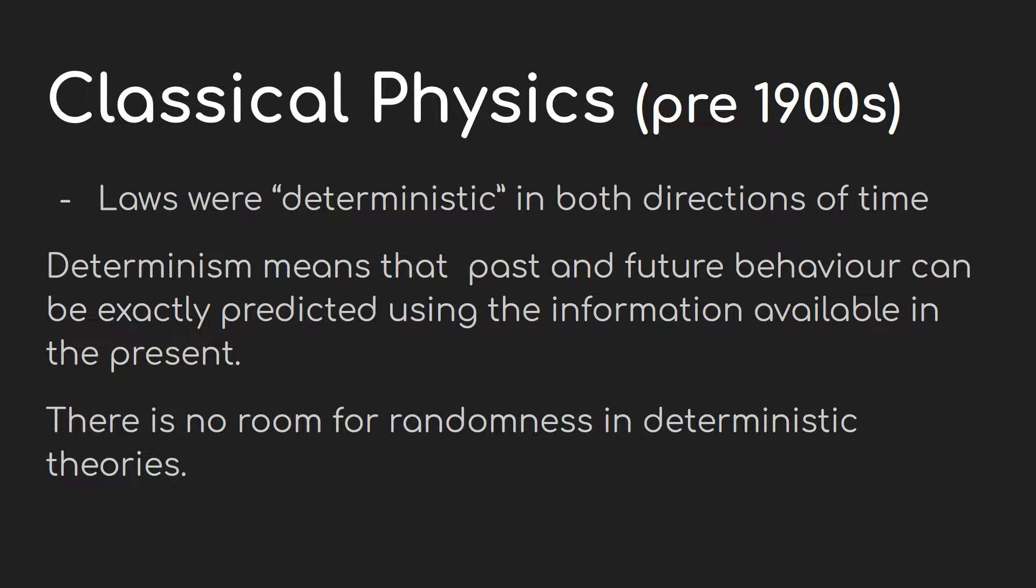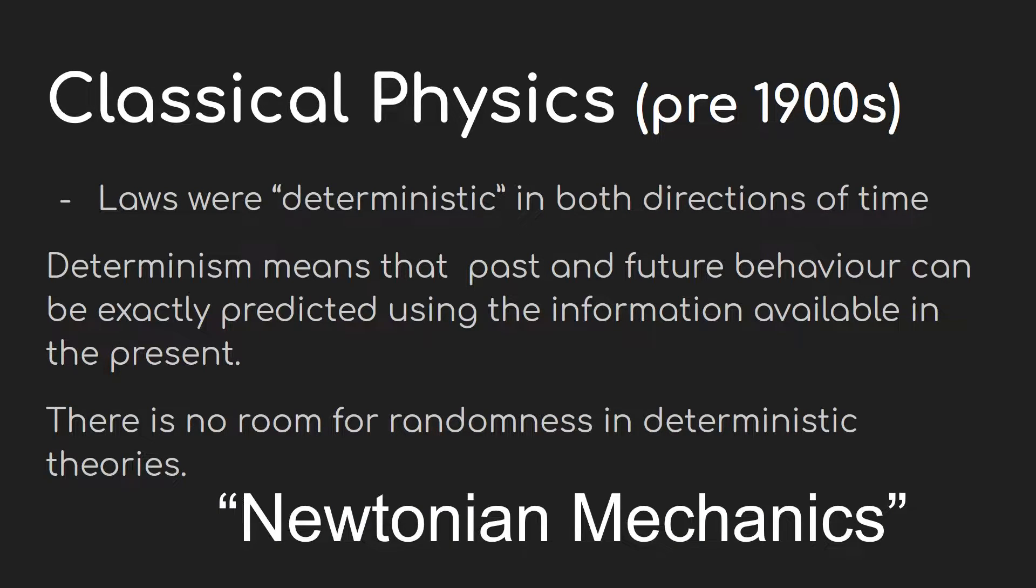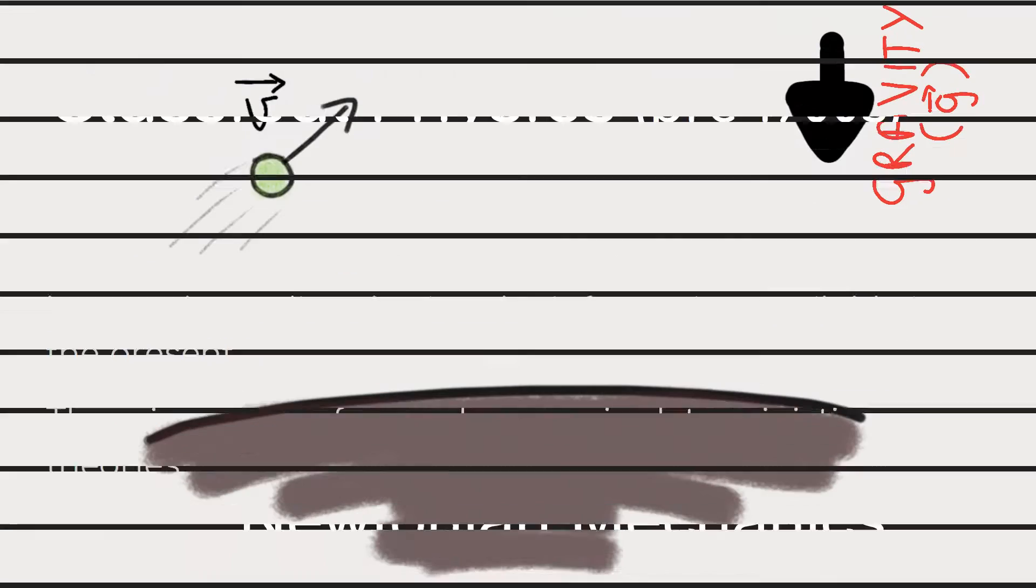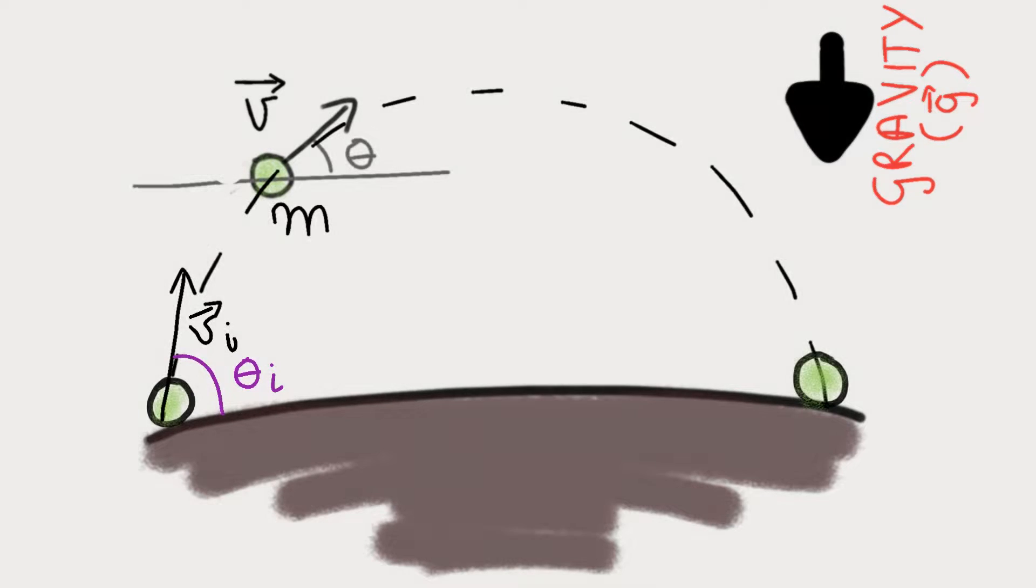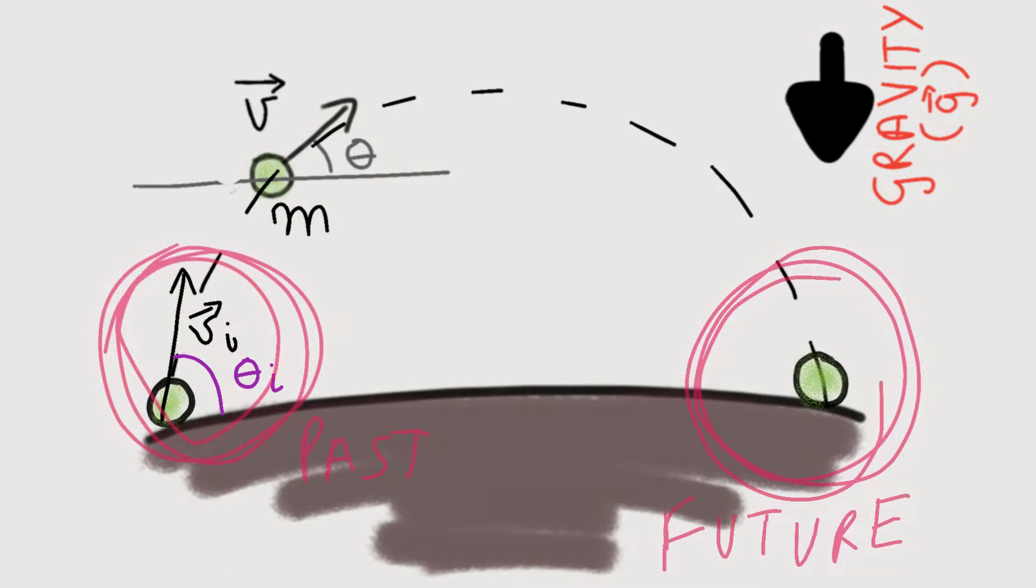What this means is that by knowing the current state of an object and the surrounding conditions, the object's past and future can be exactly predicted if proper calculations are performed. You can verify that this is true in the case of Newtonian mechanics, which is also a classical theory. By knowing the position and momentum of an object and the surrounding conditions, we can calculate where it came from and where it will go. In physics, this is just called finding the trajectory of an object.